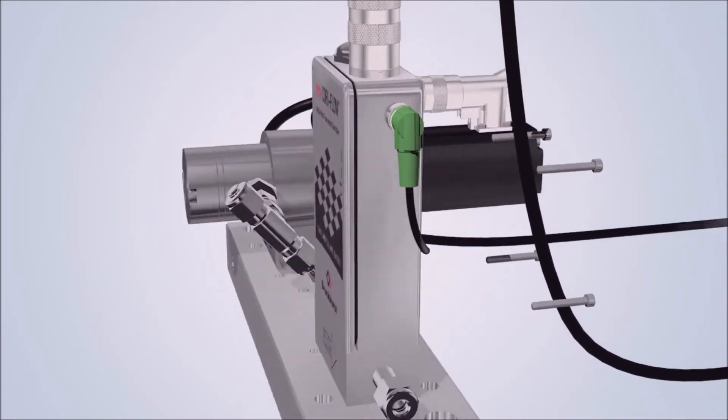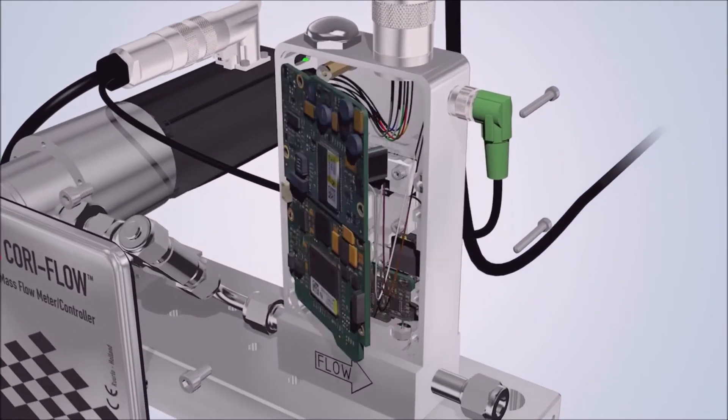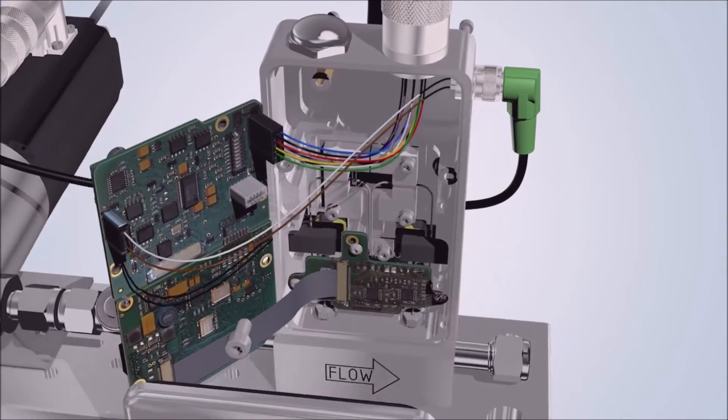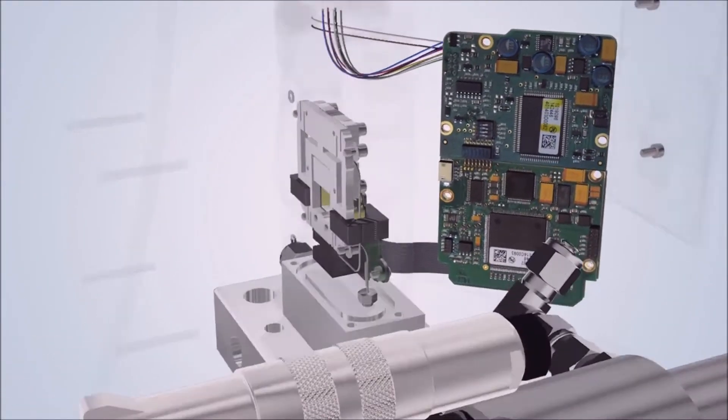Inside the robust Mini CoriFlow housing are the digital electronics, optical sensor and sensor tube. The internal diameter of the sensor ranges from 0.25 mm to 3.1 mm.